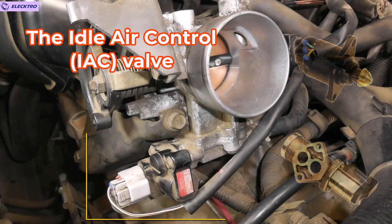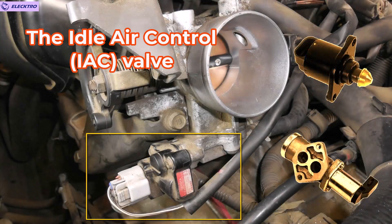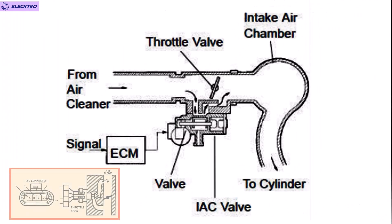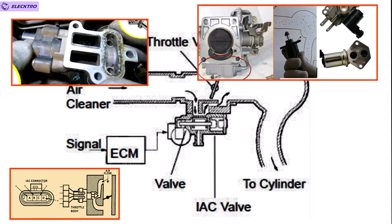We'll start with number one: problems with the IAC valve, which is one of the most common. When the idle air control valve stops working, our car automatically loses the ability to regulate the idle speed. If we do not have the main component to regulate idle speed, we are going to have these problems where the RPM go up and down in an uncontrolled manner — directly caused because the device controlling idle speed is not working.